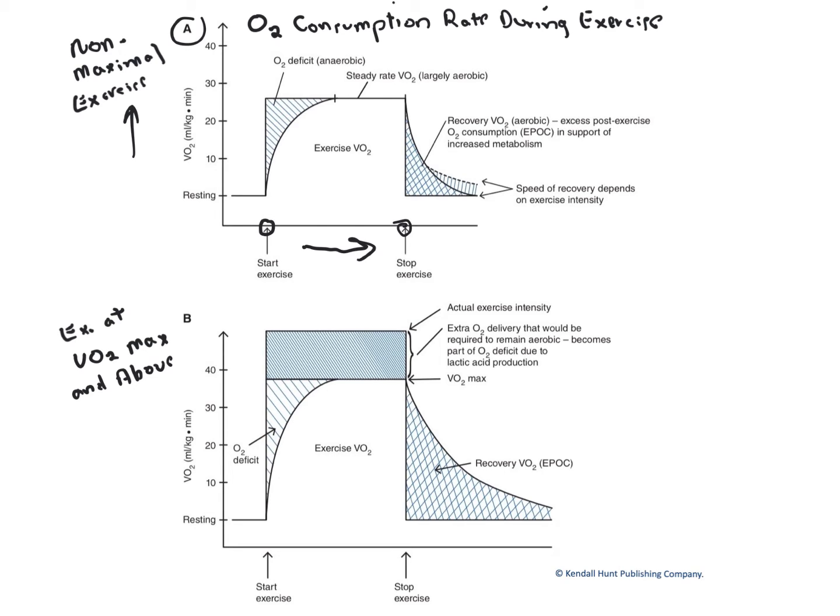Graph A, non-maximal exercise, and graph B, much more intense exercise at VO2 max or beyond. Let's go ahead and jump into graph A, non-maximal exercise.